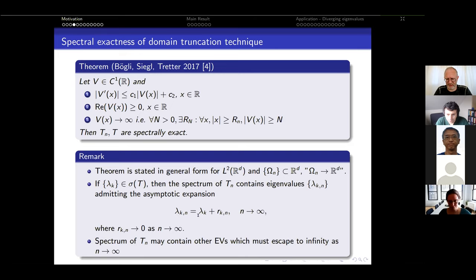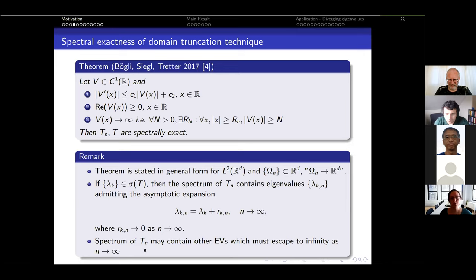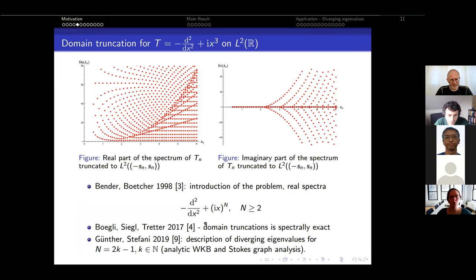But there is a catch. While spectral exactness is nice, the spectra of the truncated operators T_n may also contain other eigenvalues — ones that have nothing to do with those you're interested in. For all of spectral exactness to hold, these extra eigenvalues must escape to infinity in the limit. But if you just compute the spectrum of T_n on the finite interval, those extra eigenvalues will be present.